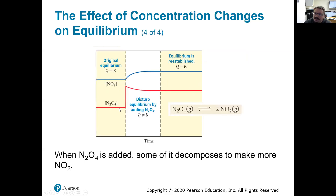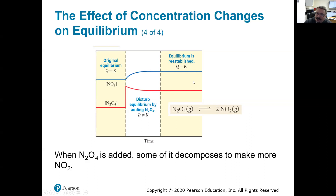What if we increase the reactants instead? That's going to push it away from the reactant side toward the product side. So we increase N2O4, the forward reaction is favored, and we see more NO2 being produced. The product concentrations increase while the reactant concentrations decrease until we reach new concentrations — but the equilibrium constant is identical, and the ratio of concentrations equals whatever K requires.